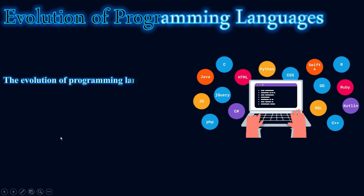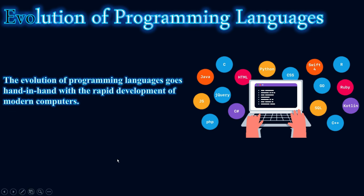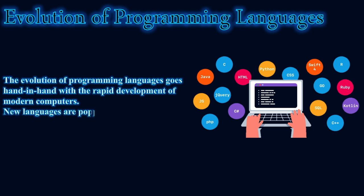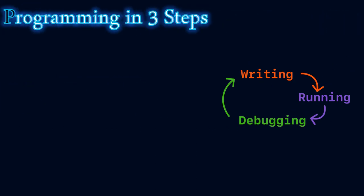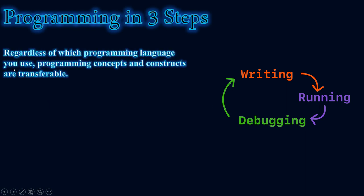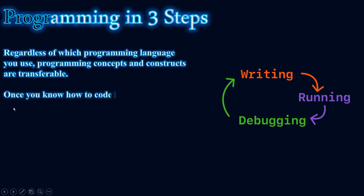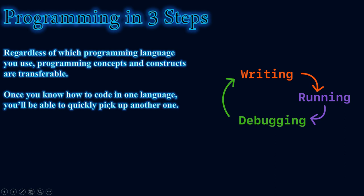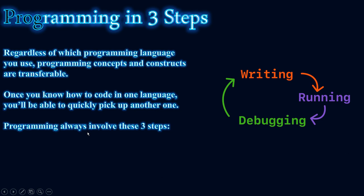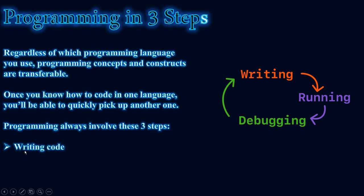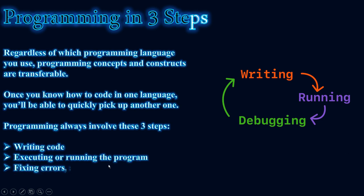The evolution of programming languages goes hand in hand with the rapid development of modern computers, and new languages are appearing every day. Programming and coding has three main steps: writing the code, running the code, and debugging — which means finding and fixing errors. Regardless of which programming language you use, programming concepts and constructs are transferable: once you know how to code in one language, you'll be able to quickly pick up another.